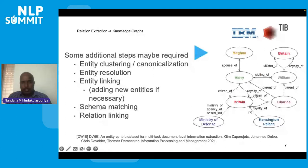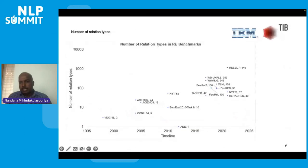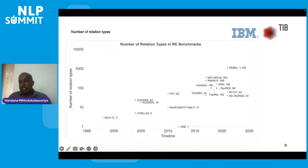Regarding benchmarks for relation extraction: from around 2017, we see an increasing number of benchmarks, reflecting growing interest in this area. Current approaches are solving previous benchmarks quite well, driving the need for more challenging ones. One way to make the task harder is to increase the number of relations. In the early 2000s, benchmarks had three to five distinct relations, but now we have benchmarks with more than a thousand relations, and current approaches have improved greatly to identify large numbers of relations with reasonable accuracy.